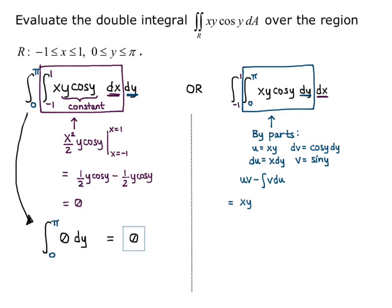So then I need the integral to equal uv minus the integral of vdu. So that's xy times sine y, that's my u times v, evaluated from y equals 0 to y equals pi, minus the integral from 0 to pi of sine y, which is my v, times du x dy. And I have to evaluate that anti-derivative from 0 to pi.